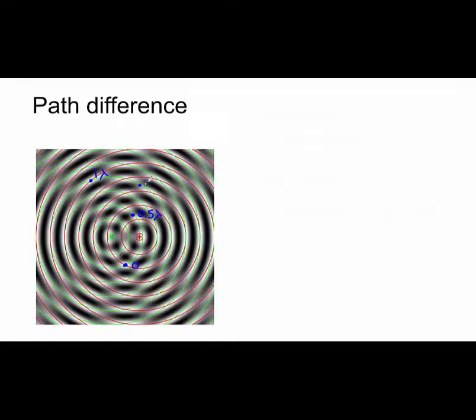At this point here, the green wave has travelled four wavelengths, while the pink wave has travelled three and a half — so we have a path difference of 0.5 lambda. Finally, at this point, the green wave has travelled three and a half wavelengths, while the pink wave has travelled five and a half — so we have a path difference of two wavelengths.